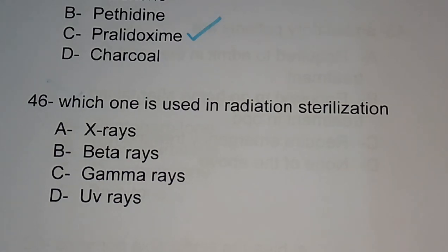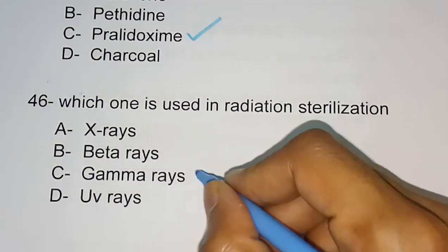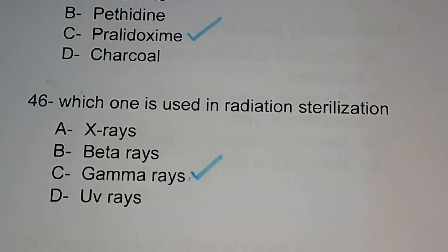Question number 46: which one is used for radiation sterilization? Options are X-rays, beta rays, gamma rays, UV rays. We know that for radiation sterilization all of these can be used, but since there is no 'all of the above' option, go for gamma rays — option C is the correct answer. If there is an 'all of the above' option, you can select all of them.